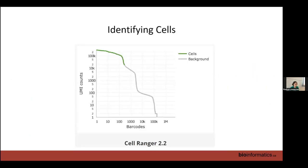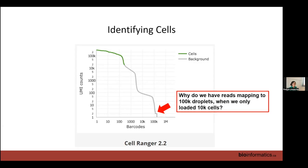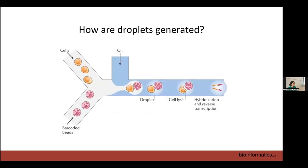Once we have our UMI-by-cell matrix, we create a barcode rank plot: take the total number of UMIs mapped to each whitelist cell barcode, plot it on a log-log scale, and we can see reads mapping to around 100,000 droplets even if we only loaded 10,000 cells.